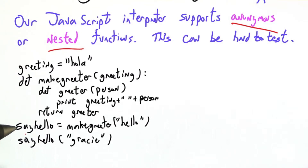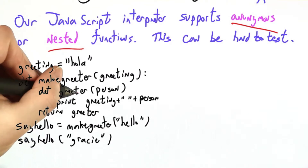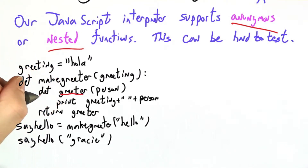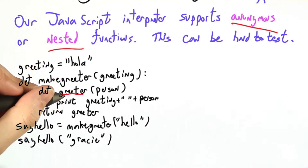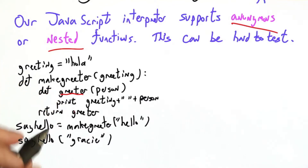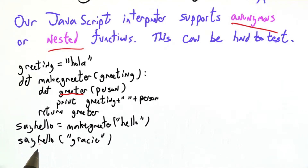Recall this Python example from before where we had a nested function definition of greeter that we returned, and the final output of this program would be: hello, Gracie.